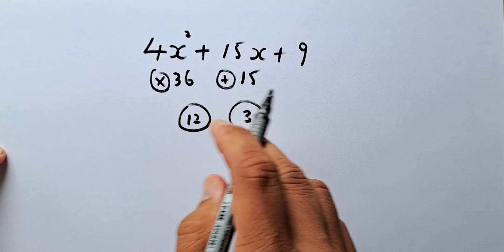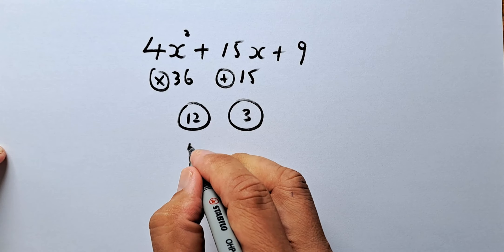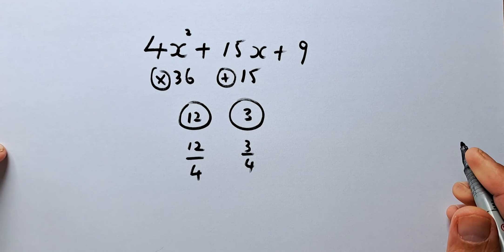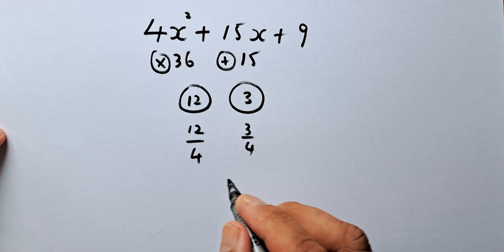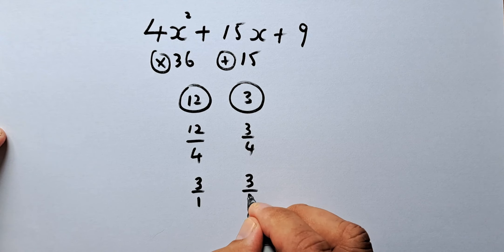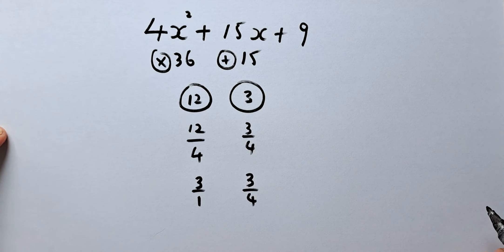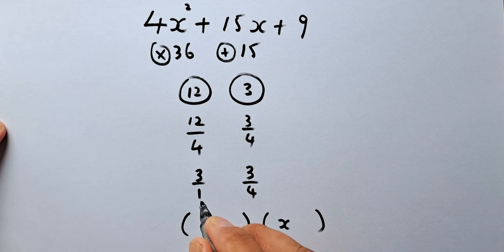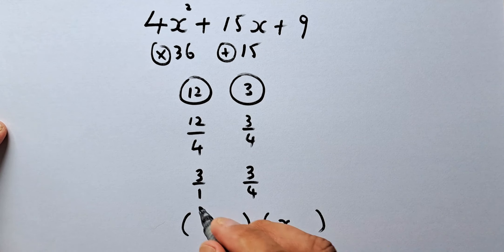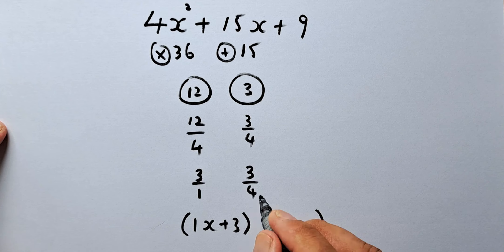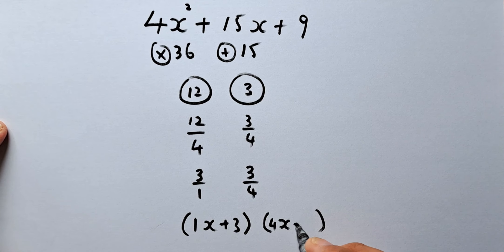Next step, you are going to divide these two numbers by 4, so 12 over 4 and 3 over 4. Simplify the fraction: 12 over 4 is going to be the same as 3 over 1, and 3 over 4 stays. Last but not least, we are going to put them in a bracket with x and x. The 1 and 4 are the x number, so 1 goes up: 1x plus 3. And the other one: 4 goes up, 4x plus 3.